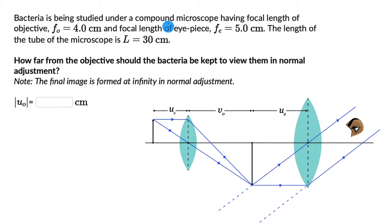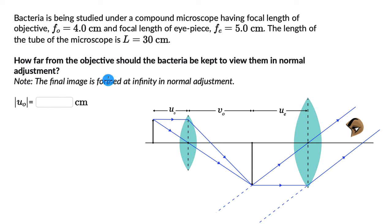Bacteria is being studied under a compound microscope having focal length of objective which is 4 centimeters and focal length of the eyepiece is 5 centimeters. The length of the tube of the microscope L is 30 centimeters. The question is: how far from the objective should the bacteria be kept to view them in normal adjustment? Note: the final image is formed at infinity in normal adjustment.